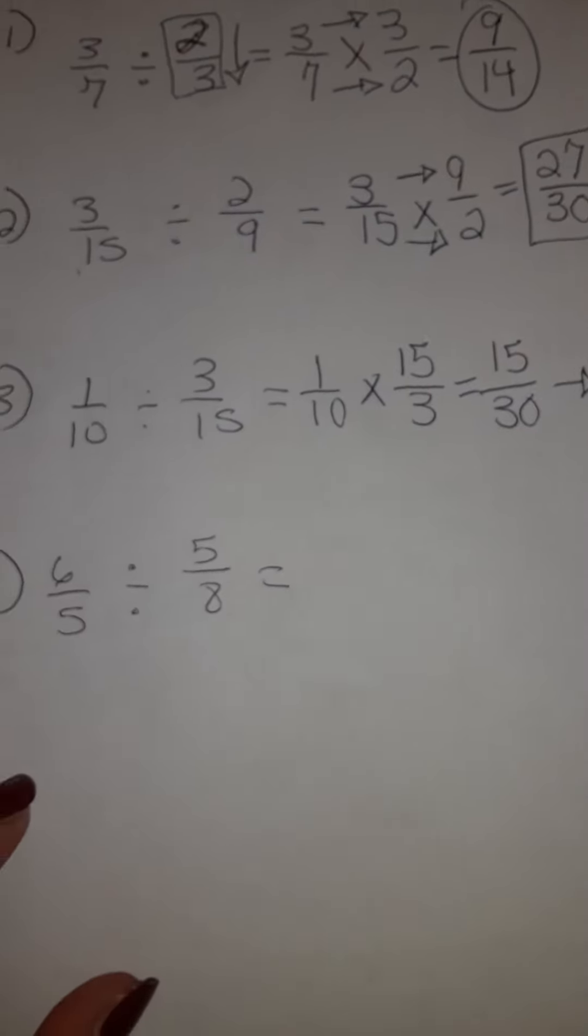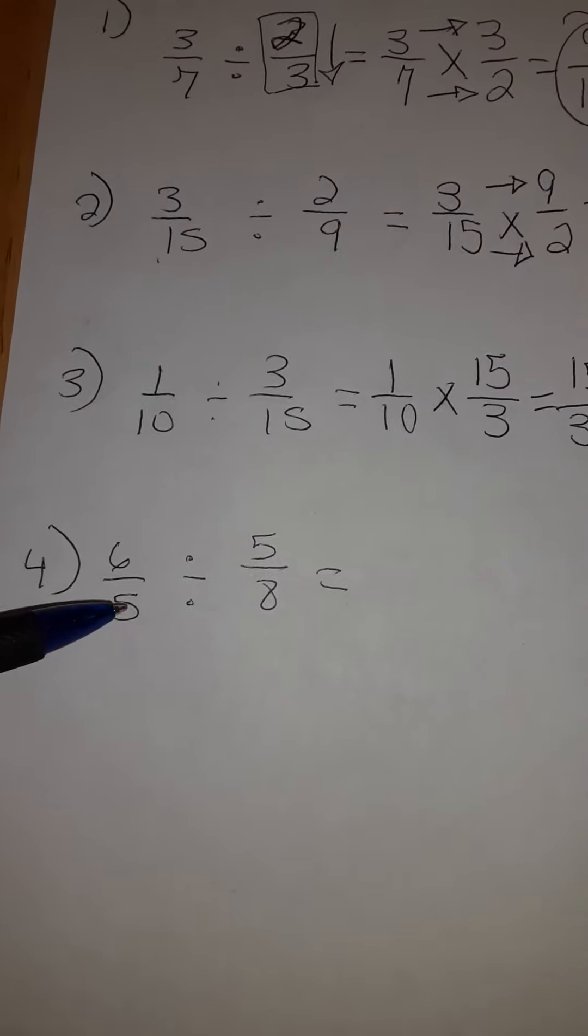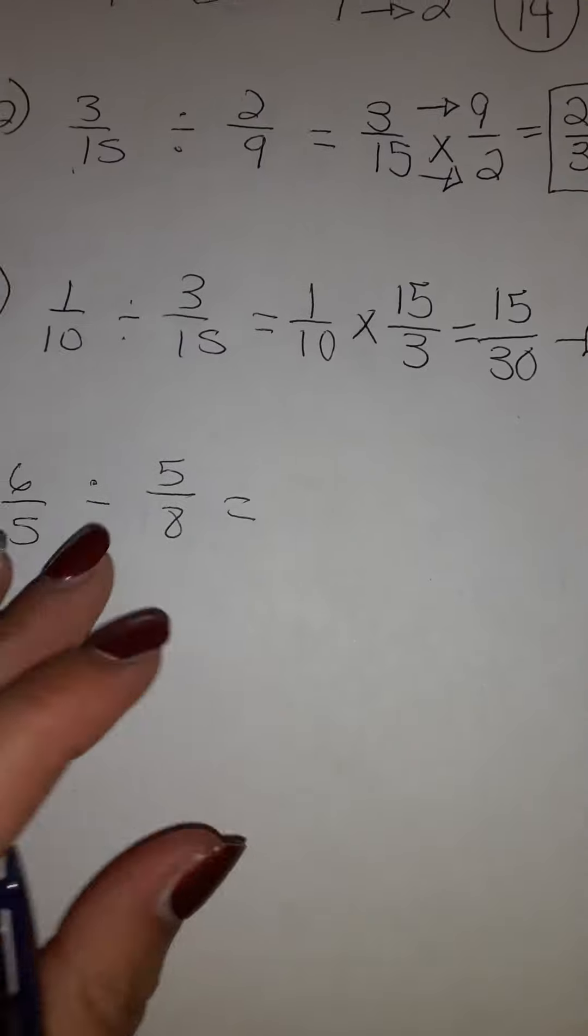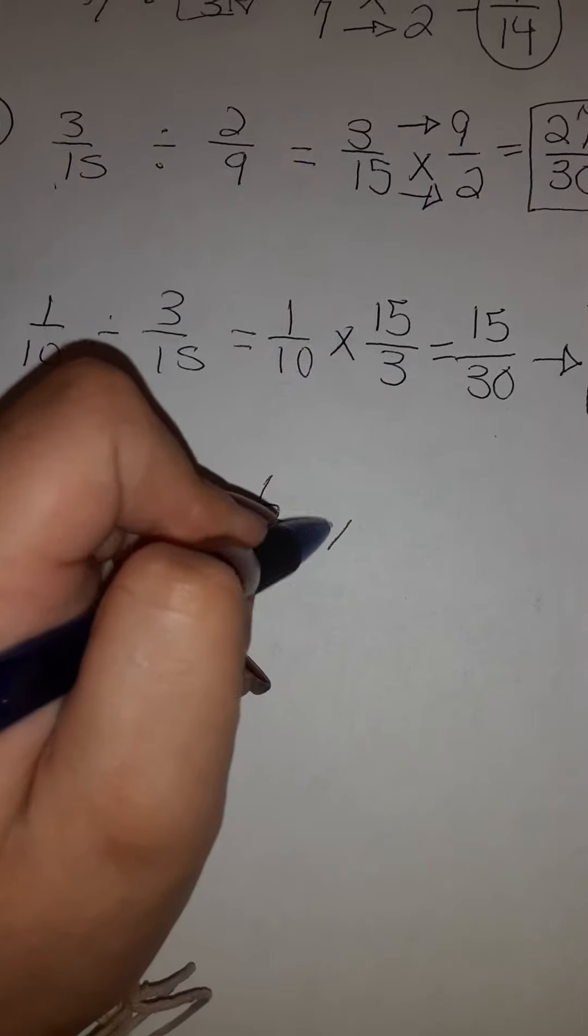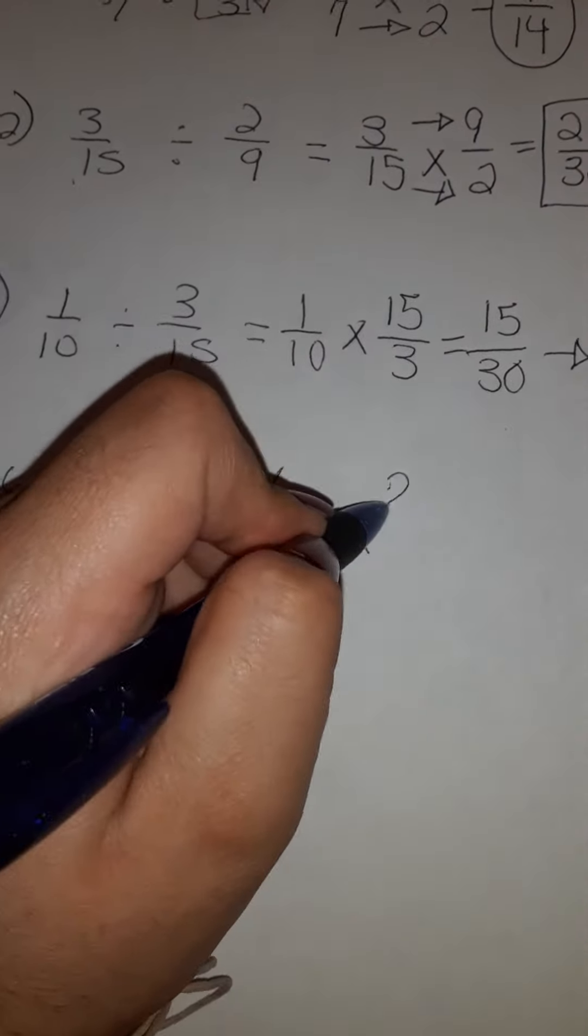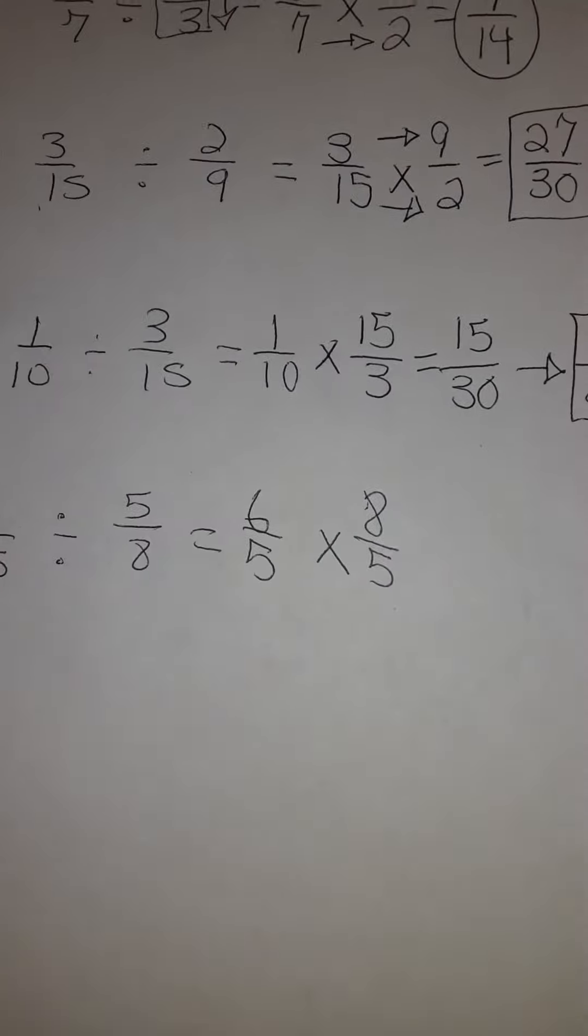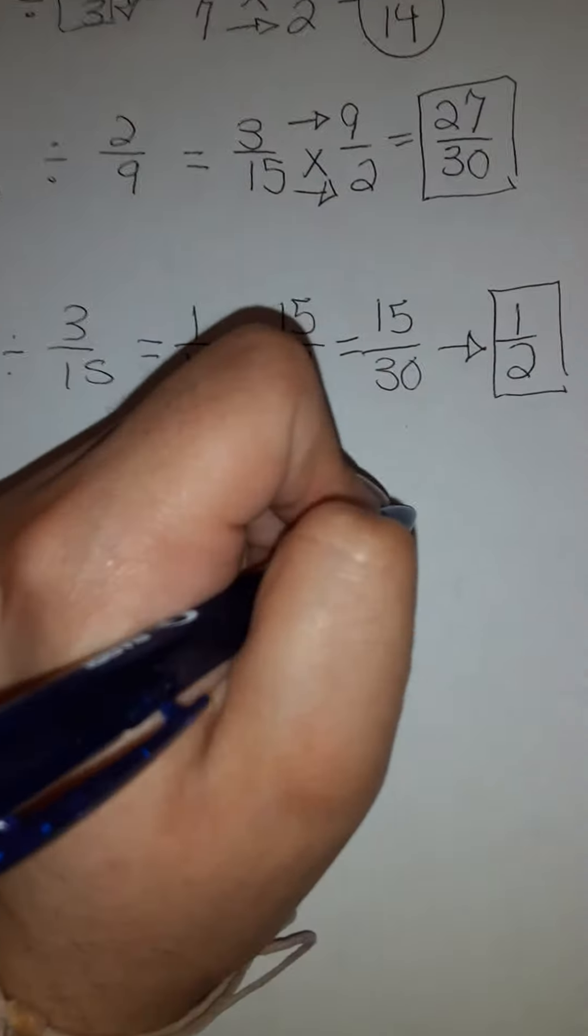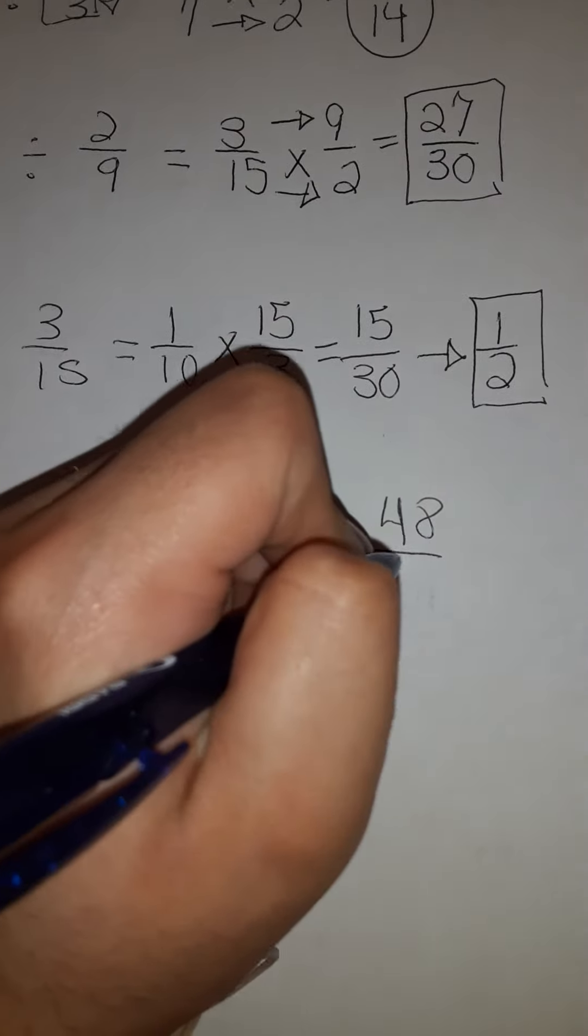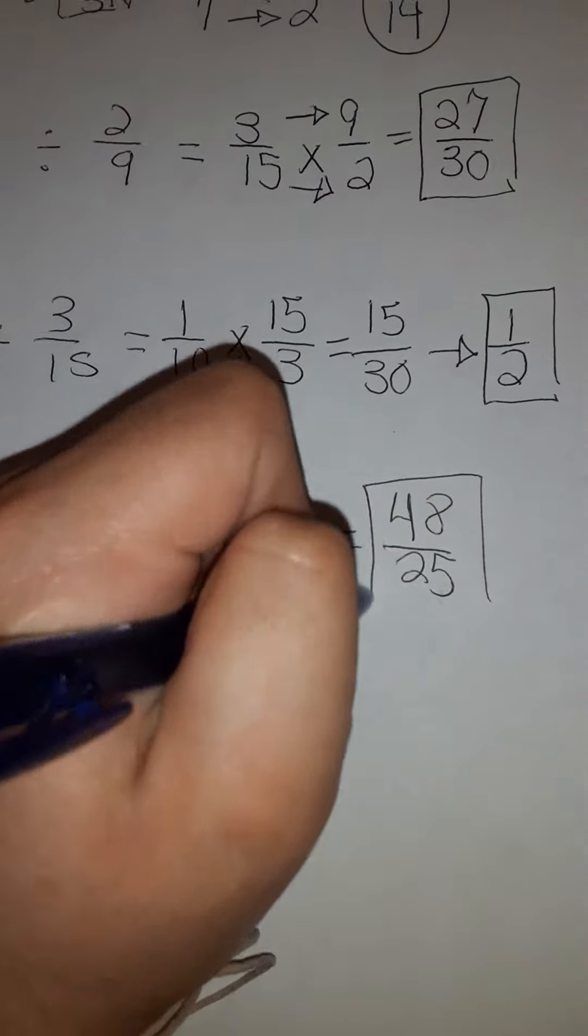Number 4. 6 fifths divided by 5 over 8. We have 6 fifths times, we flip it, 8 over 5. We multiply across and we get 48 over 25 as your answer.